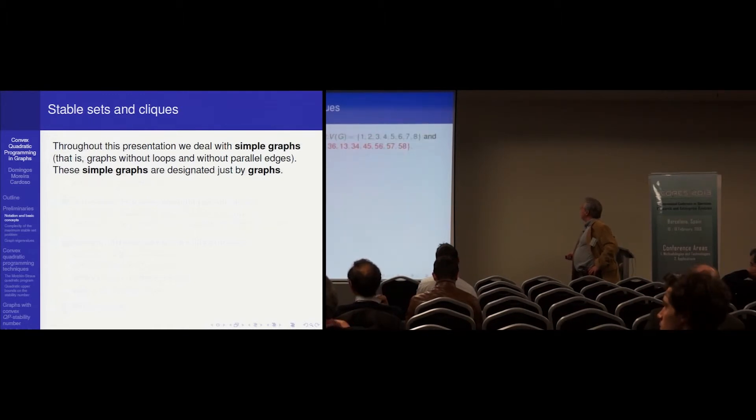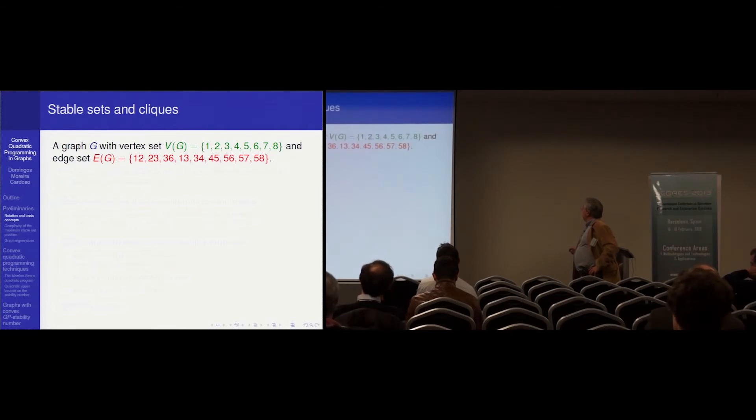A graph G is by definition defined by a vertex set, here one, two, three, four, and so on, and the set of edges. So we have here in the picture a graph, which is a set of dots labeled, and a set of links between dots, between vertices.